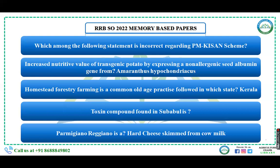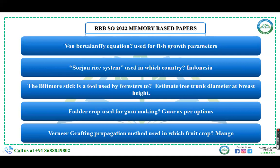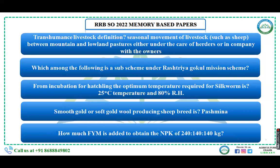One question was about the Von Bertalanffy length-weight equation used for fish growth parameters. They also asked about the Azolla-rice system, which is mainly followed in Indonesia. The Biltmore stick is a tool used by foresters to estimate tree trunk diameter at breast height. The crop used for gum making is war/var. Inarching is the grafting propagation method used in mango.